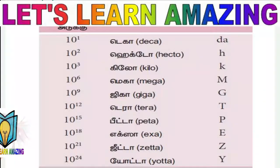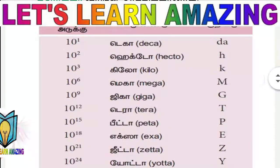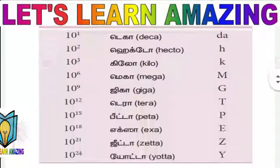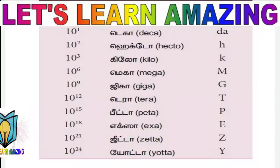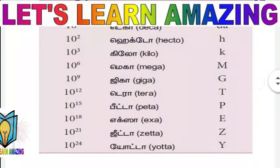10 power 15. That means peta. That means exa — 10 power 18. That means zeta — 10 power 21. That means yota.